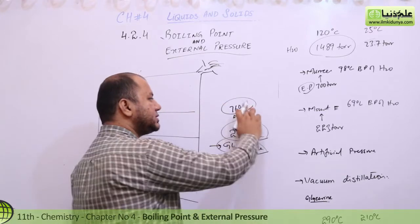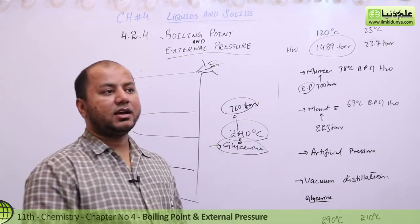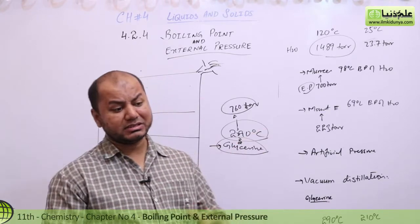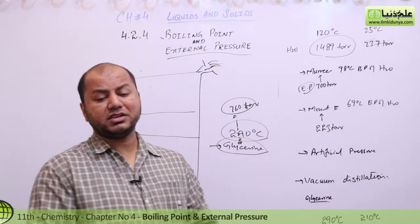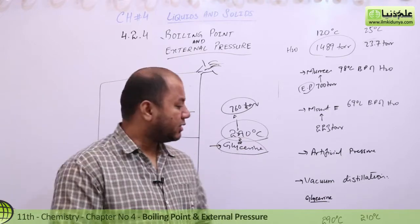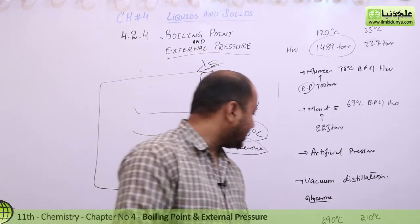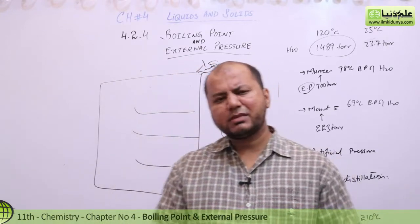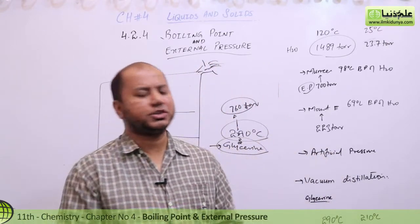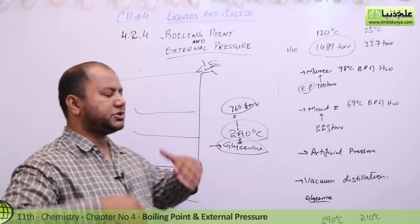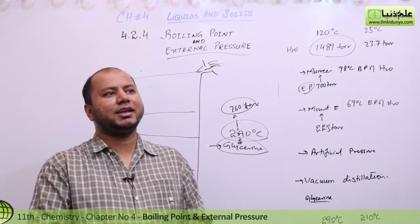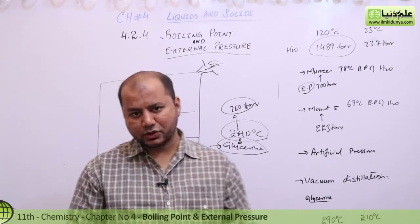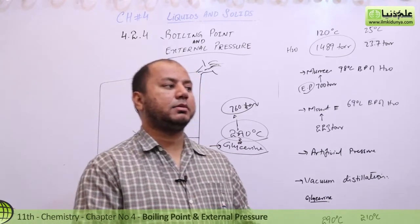Glycerine's vapor pressure reaches 760 torr at 290 degrees Celsius. However, at 290 degrees Celsius, glycerine molecules are not stable — they denature and are not able to maintain their structure. So the glycerine molecules decompose before or at this boiling point.